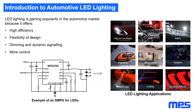In the automotive market, LED lighting is gaining popularity over traditional halogen light bulbs mainly because it offers higher efficiency, flexibility of design since you can implement things like dimming and dynamic signaling very easily, and overall it gives more control. On the right you can see some typical applications where LED lights are being used in the automotive environment, and MPS has a solution for all of them. On the bottom there is the MPQ7200, one of our newer LED drivers that implements features like an external NTC to control LED temperature, derating according to temperature to increase the lifespan of the LED. It also has the current sense internally, so you don't need a big current sense resistor that increases power loss, heat, and area.